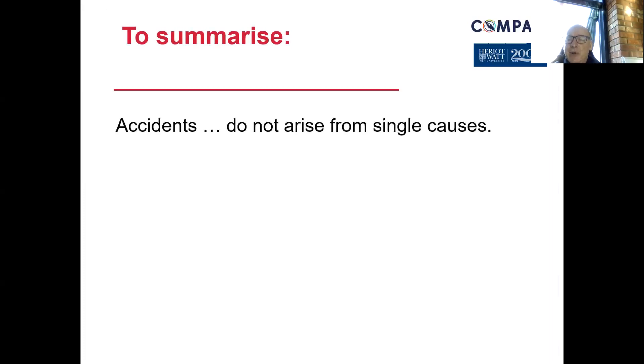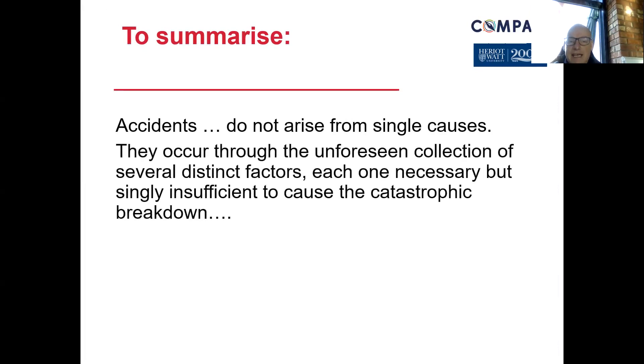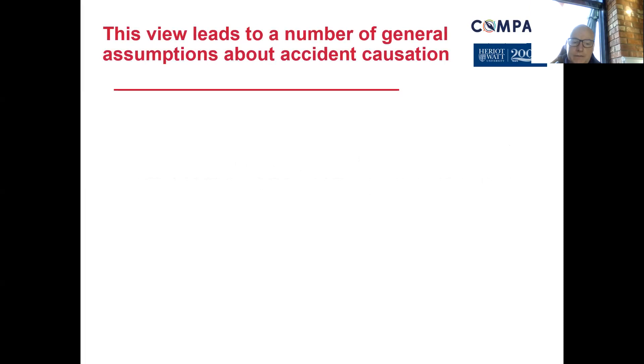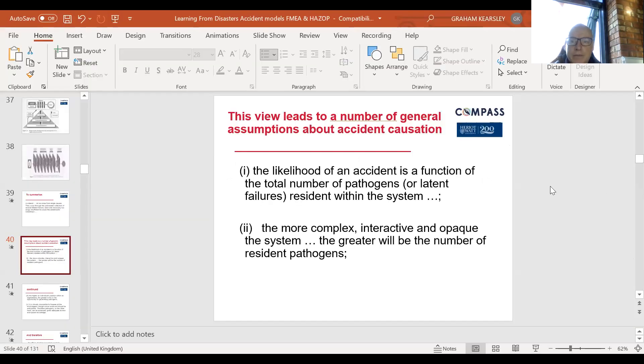In summary: there is no single cause of an accident. It's usually a combination of multiple factors — they occur through the unforeseen collection of several distinct factors, each necessary but individually insufficient to cause a catastrophic breakdown. This comes down to mismanagement allowing those factors to come together. This session on accident causation theories leads on to the next session covering reliability systems, safety-critical issues, and the importance of maintenance to prevent these things from happening.